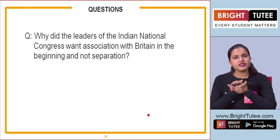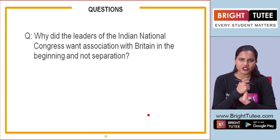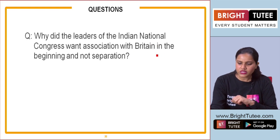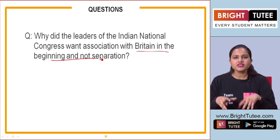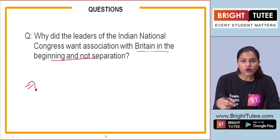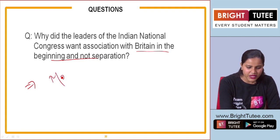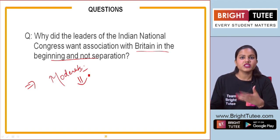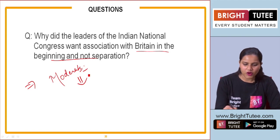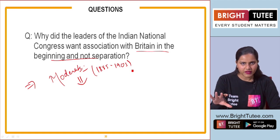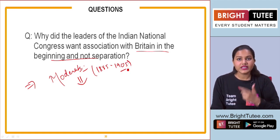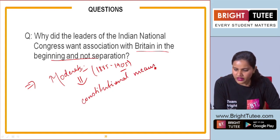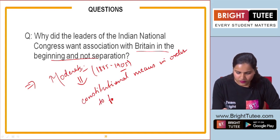Now let us look at practice questions based on this topic. The first question is: Why did the leaders of the Indian National Congress want association with Britain in the beginning and not separation? To answer this question, you need to talk about the moderate phase. The moderate leaders were in support of the British government and believed in the British justice system. You should mention that they believed in constitutional means to fulfill their demands.